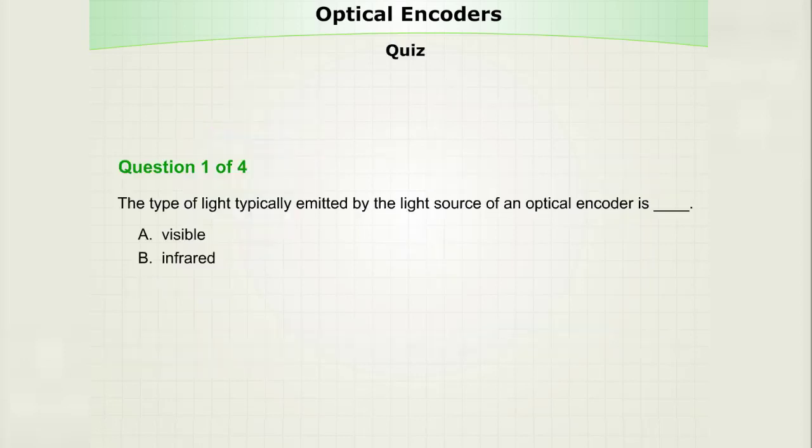Let's do a quick review. The type of light typically emitted by the light source of an optical encoder is A, visible, or B, infrared. The answer is B, infrared.